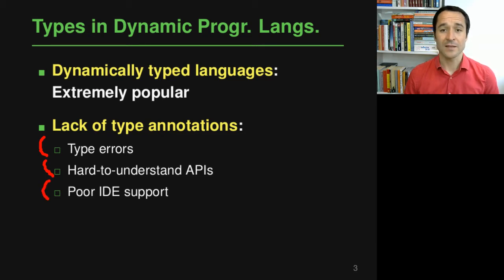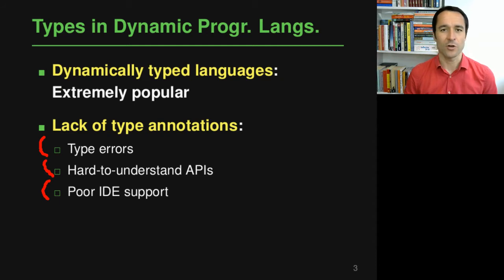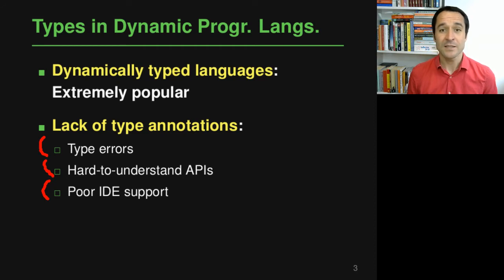Finally, the lack of type annotations also makes it pretty hard for an IDE to provide good support. For example, if you want auto-completion or to automatically jump to the definition of a function, all of this is much easier if the IDE knows some of the types in your program — but without type annotations it simply doesn't know.